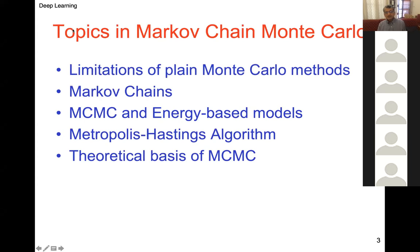What are the topics within Markov Chain Monte Carlo? First, we talk about limitations of plain Monte Carlo, like independent sampling. Then we define the idea of Markov chains. MCMC prefers probability distributions in the form of an energy-based model. When we talked about probabilistic graphical models, we discussed how an undirected model can be represented by means of factors over all of its cliques.